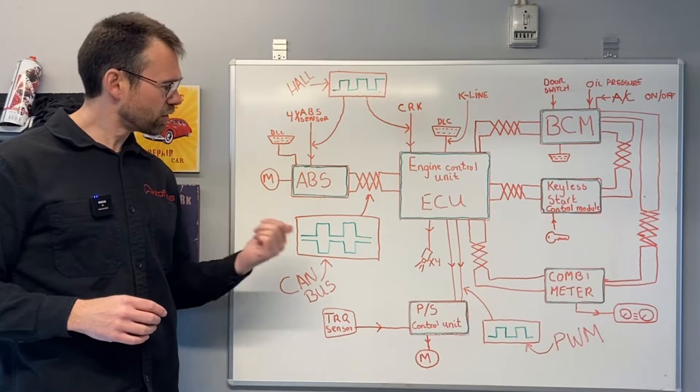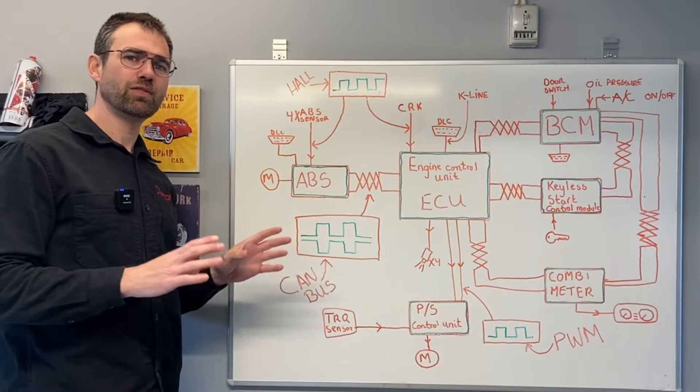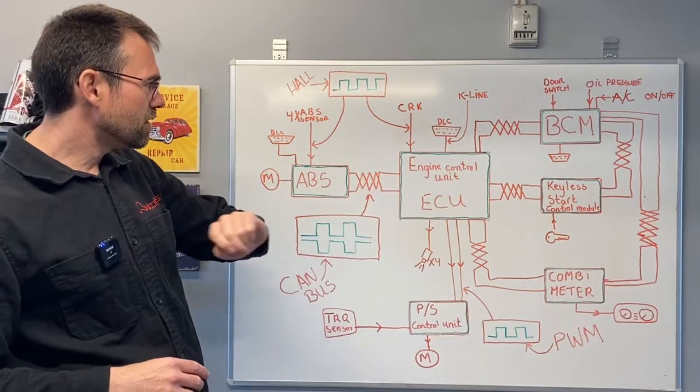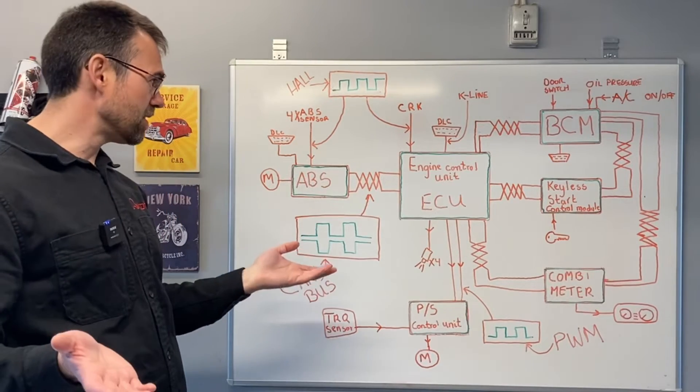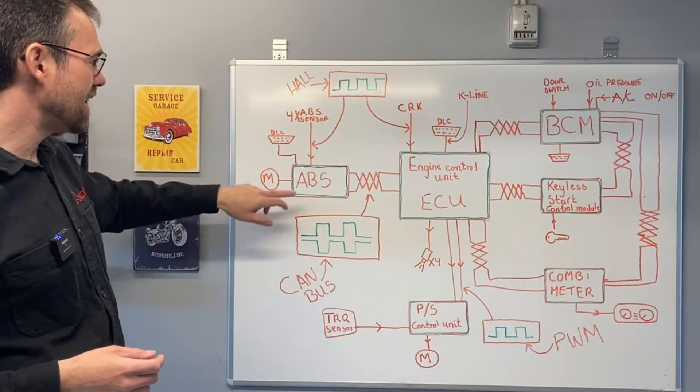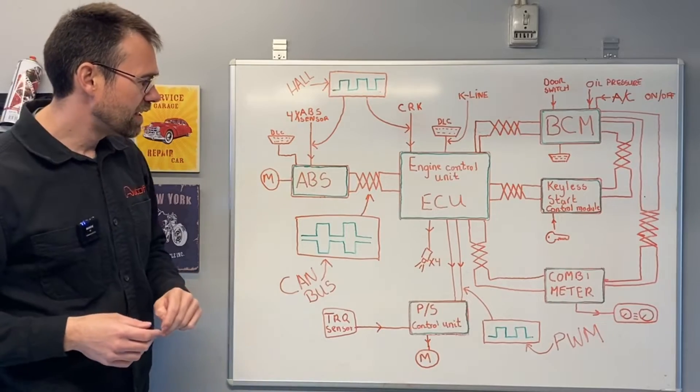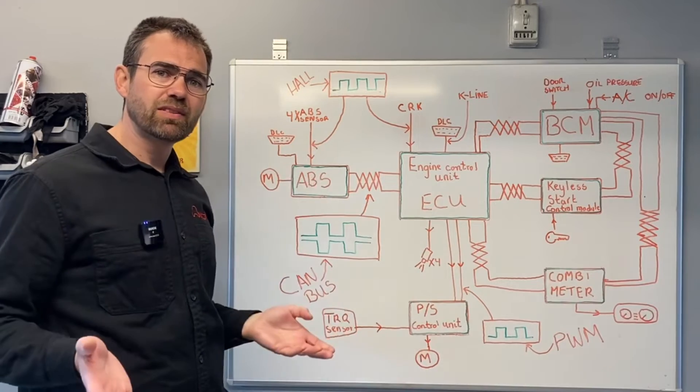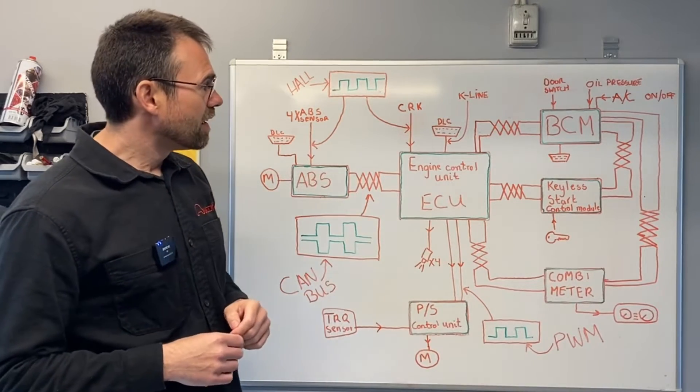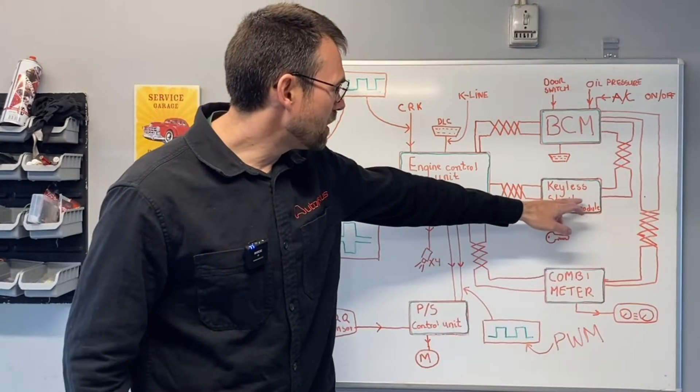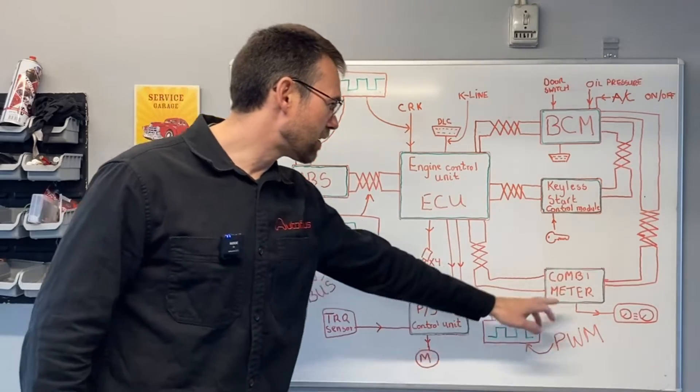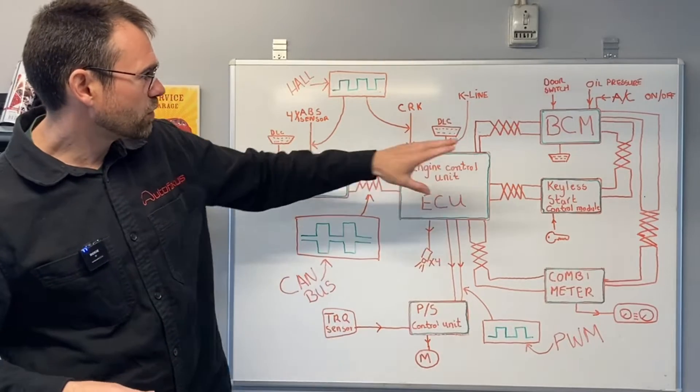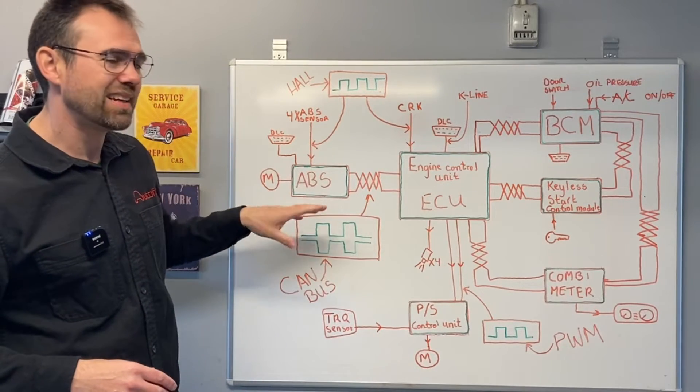First of all, let's go through how the Suzuki Swift is built up. It has an engine control unit which monitors and controls the engine, an ABS control unit, a body control module handling everything inside the car, the immobilizer or keyless start control module, and the combi meter instrument cluster. All these work together.